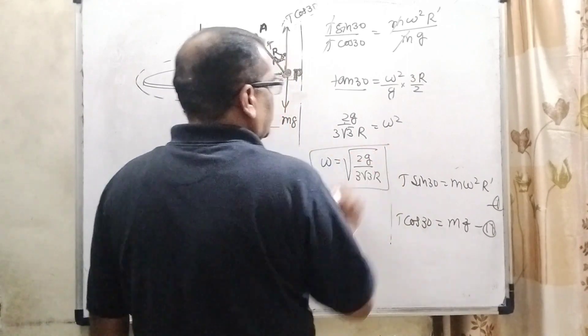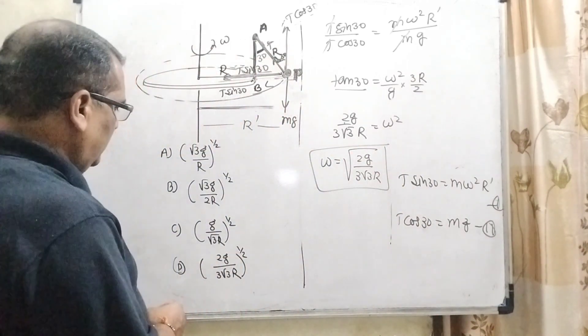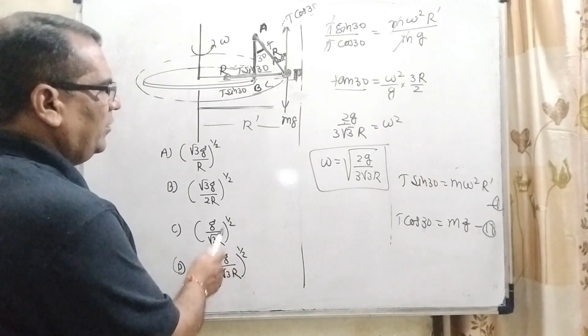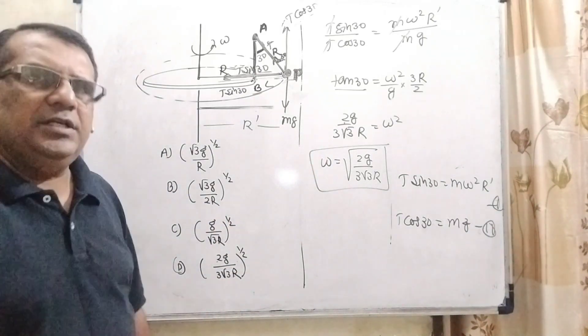Let's see which option is matching here. Here option D 2G by 3 root 3R raised to power 1 by 2. So, here option D is correct.